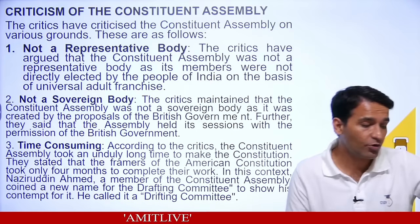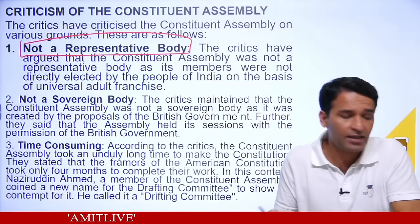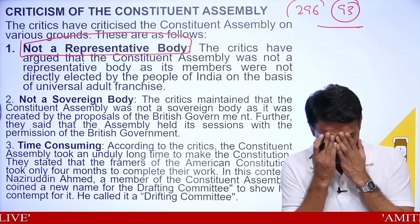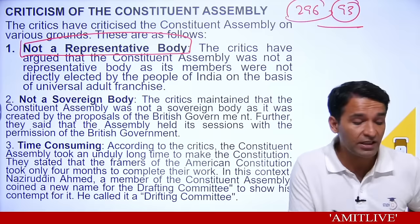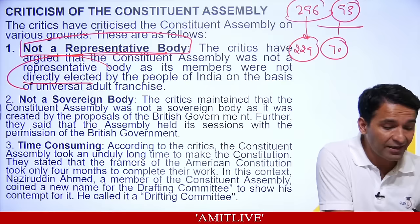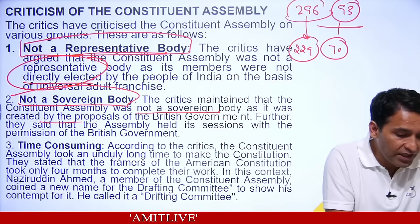There were 93 people from princely states who came by nomination — kings' or queens' nomination. Of the 229 people in the Indian Constituent Assembly, 70 came only by nomination, so it could not be called a fully representative body. Members were not directly elected; some were nominated. Also, it was not a sovereign body — it was created by the British government.